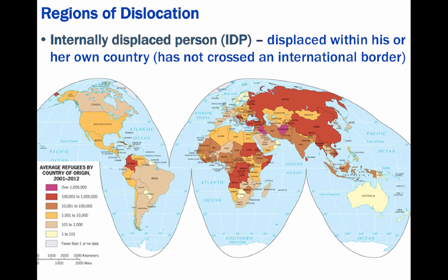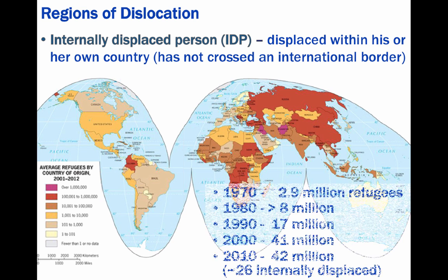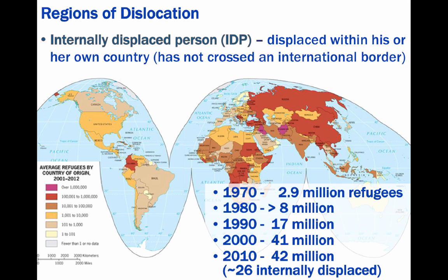The best data we have is from the UNHCR, or the United Nations High Commissioner for Refugees. According to them, in 1970 about 2.9 million refugees existed; in 1980, over 8 million existed. More recently, as many as 11 million or more are recognized as actual refugees, but approximately 26 million more are considered internally displaced persons.